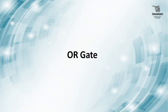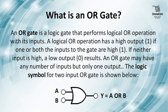First, let us know what is an OR gate. An OR gate is a logic gate that performs a logical OR operation with its inputs. A logical OR operation has a high output if one or both the inputs to the gate are high. If neither input is high, a low output results. An OR gate may have any number of inputs but only one output. The logic symbol for the two-input OR gate has two inputs A and B, and the output equals A OR B.